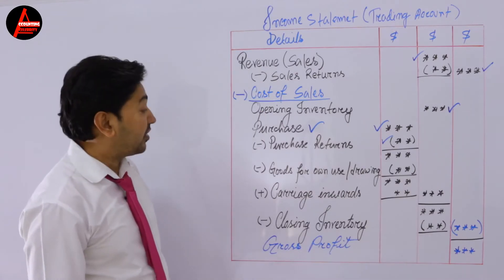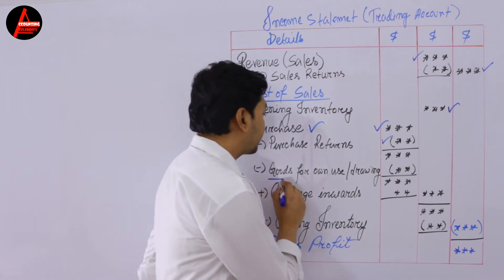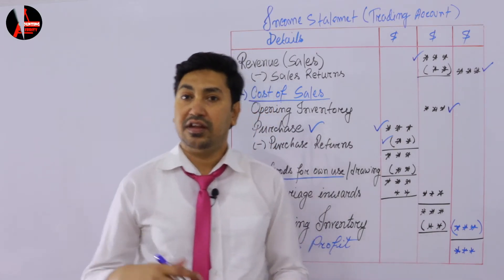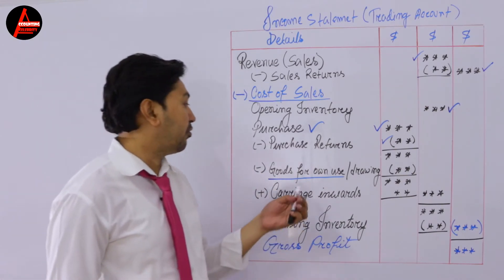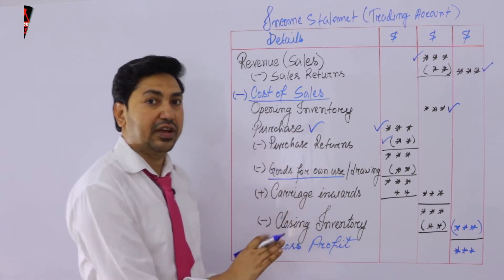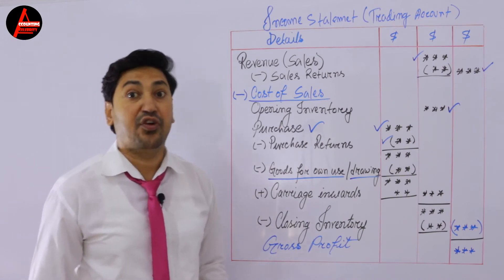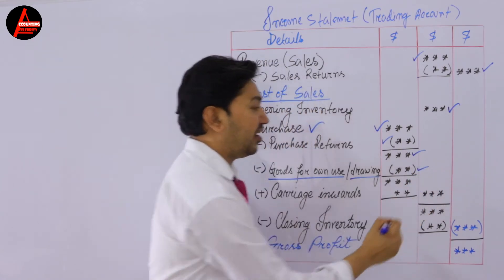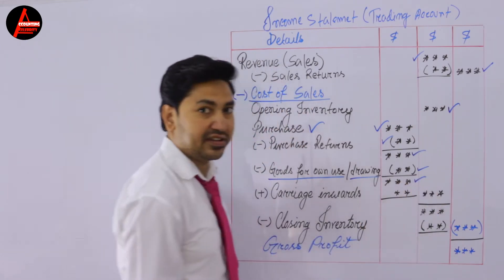After that, which item do you have to write? Goods for own use. This item will often be written in the adjustments, not in the trial balance. If you have this adjustment, you have to subtract it from purchase. Goods for own use means it is a drawing — the owner took goods for his own use. Take this value and put it under the answer here, then subtract it.